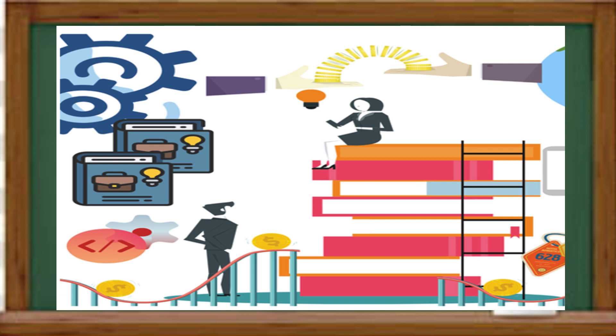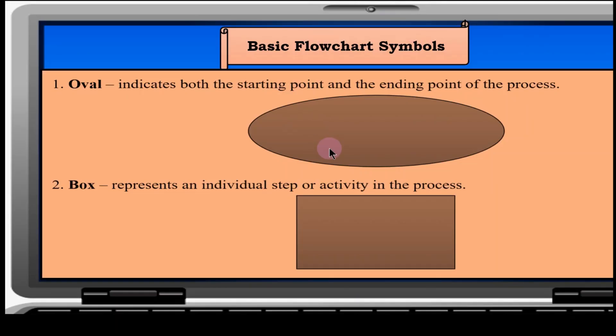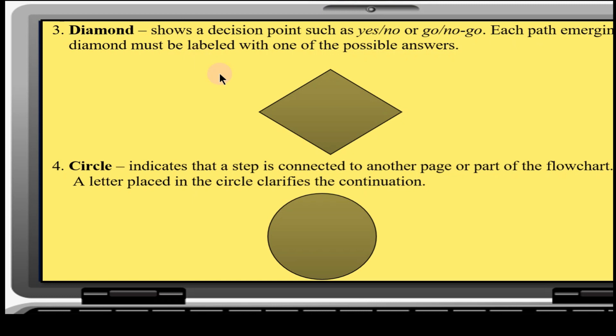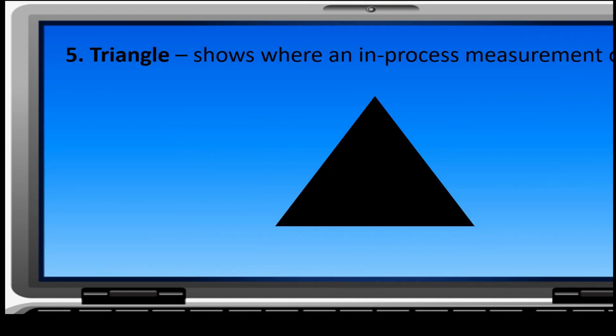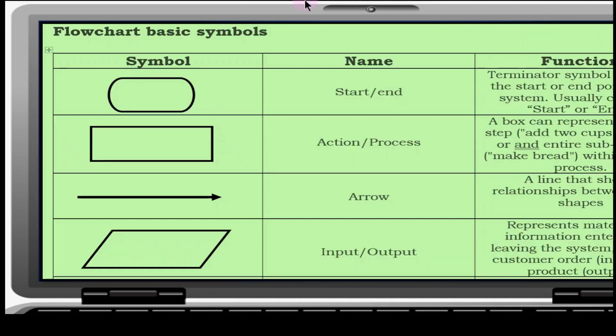And here are the basic flowchart symbols. Oval: It indicates both the starting point and the ending point. Box: Represents an individual step or activity in the process. Diamond: Shows the decision points such as yes or no, go or no-go. Each path emerging from diamond must be labeled with one of the possible answers. Circle: Indicates a step disconnected to another page or part of the flowchart. A letter placed in the circle clarifies the continuation. And the triangle: It shows where an in-process measurement occurs.